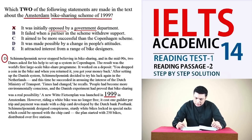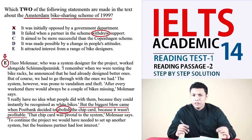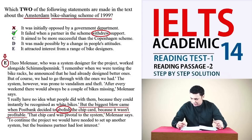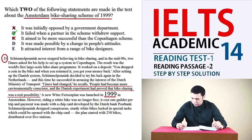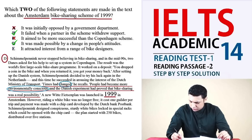The text says nothing about government initial opposition, so we can cross out option A. But in the seventh and eighth lines of paragraph E, the writer says the biggest blow came when Postbank decided to abolish the cheap card because it wasn't profitable — 'abolish' is paraphrased as 'withdrawn,' so Postbank withdrew its support, making the answer B. The paragraph also says nothing about option C, so we cross that out. In paragraph D, the writer points out that times had changed — people had become more environmentally conscious and the Danish experiment had proved that bike sharing was a real possibility. This makes option D correct, as it talks about the change in people's attitudes towards the environment. So the answers are B and D.